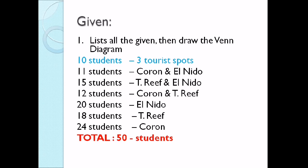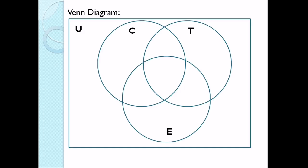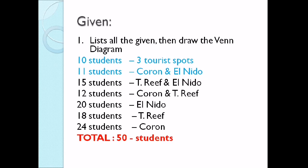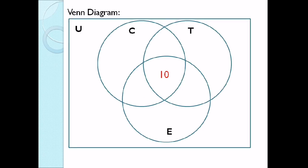So una, ilalagay natin yung 10 students sa may 3 tourist spots. Again, nag-start tayo doon sa may 3 tourist spots. So that is C intersection T intersection E. So saan natin ilalagay? Doon sa may pinaka-gitna. Ibig sabihin, ito yung mga students na pumunta doon sa 3. Next, we have 11 students for Coron and El Nido. So that is C intersection E. Ang ilalagay natin ay 1, since there are 11 students — which is 11 minus 10, doon sa intersection ng tatlo. Kaya ang ilalagay natin ay 1.